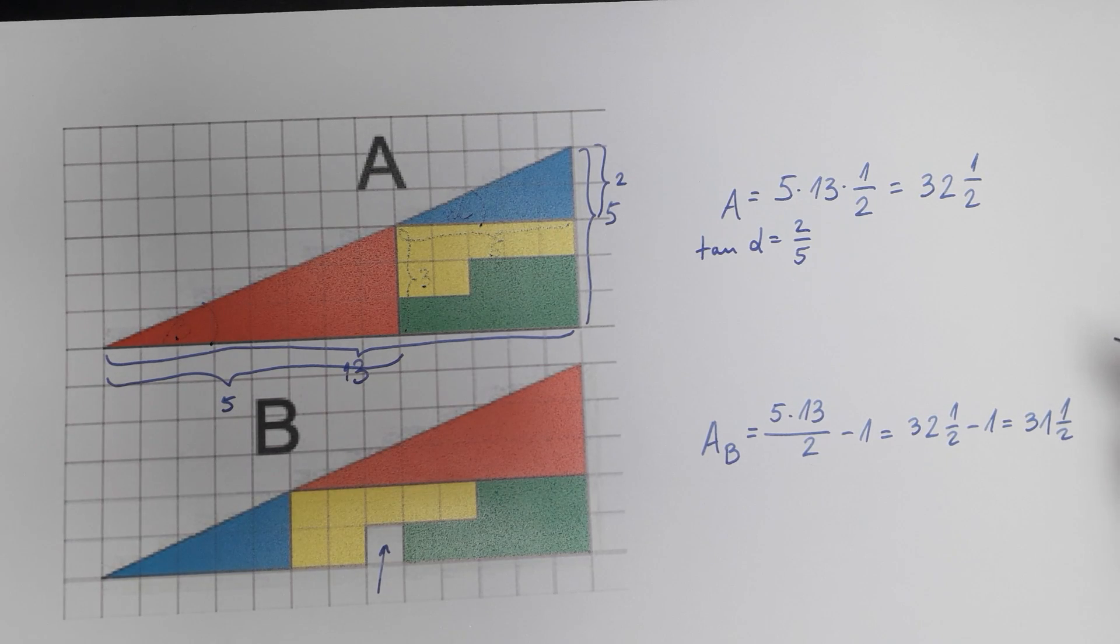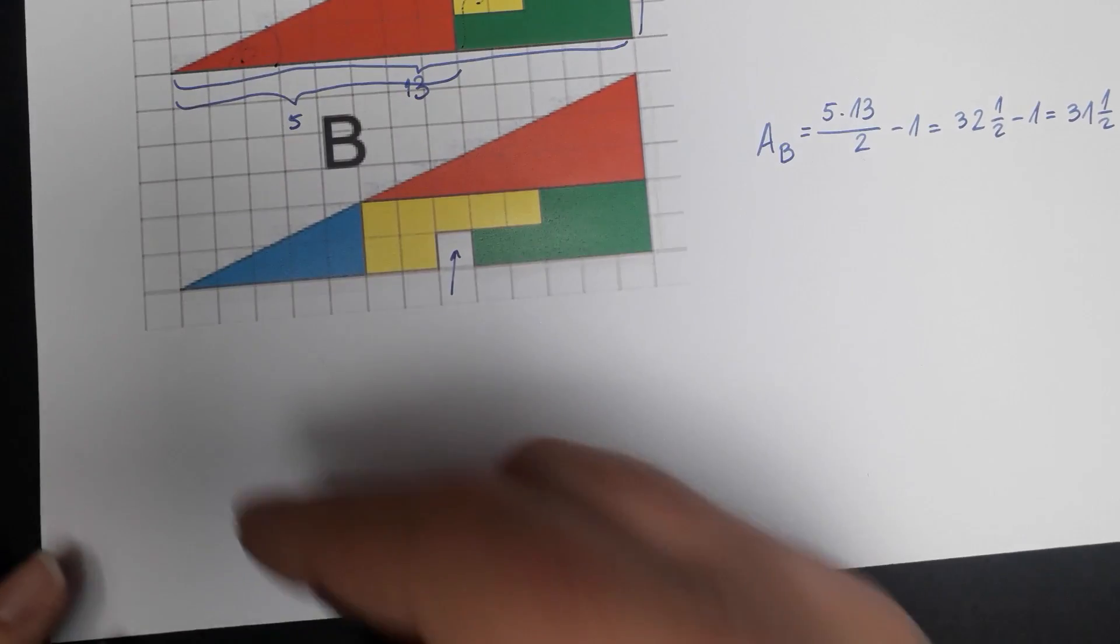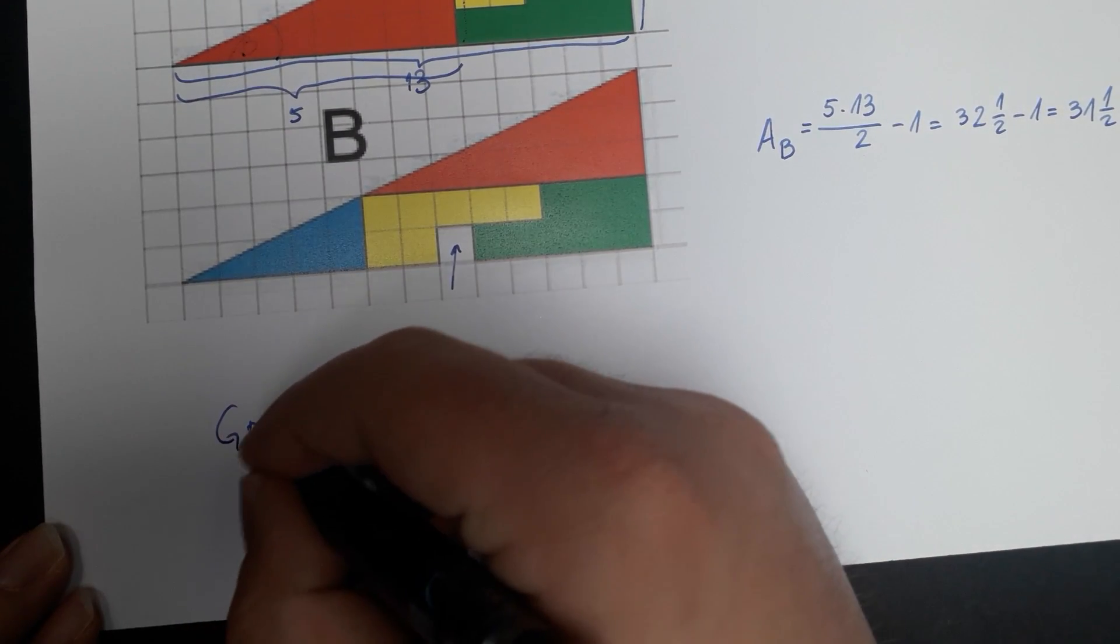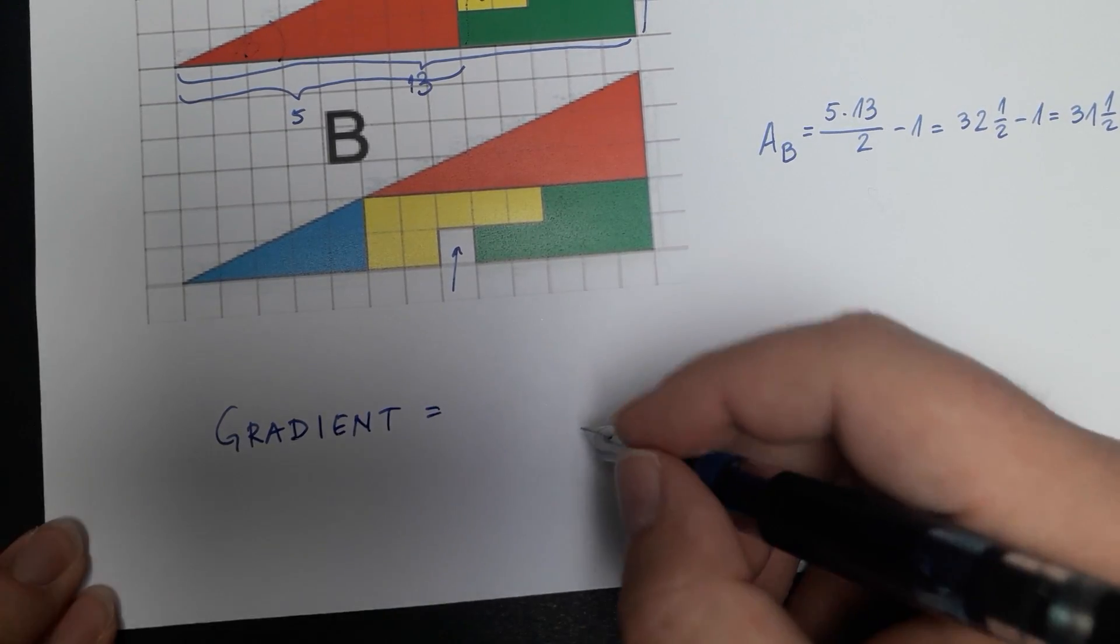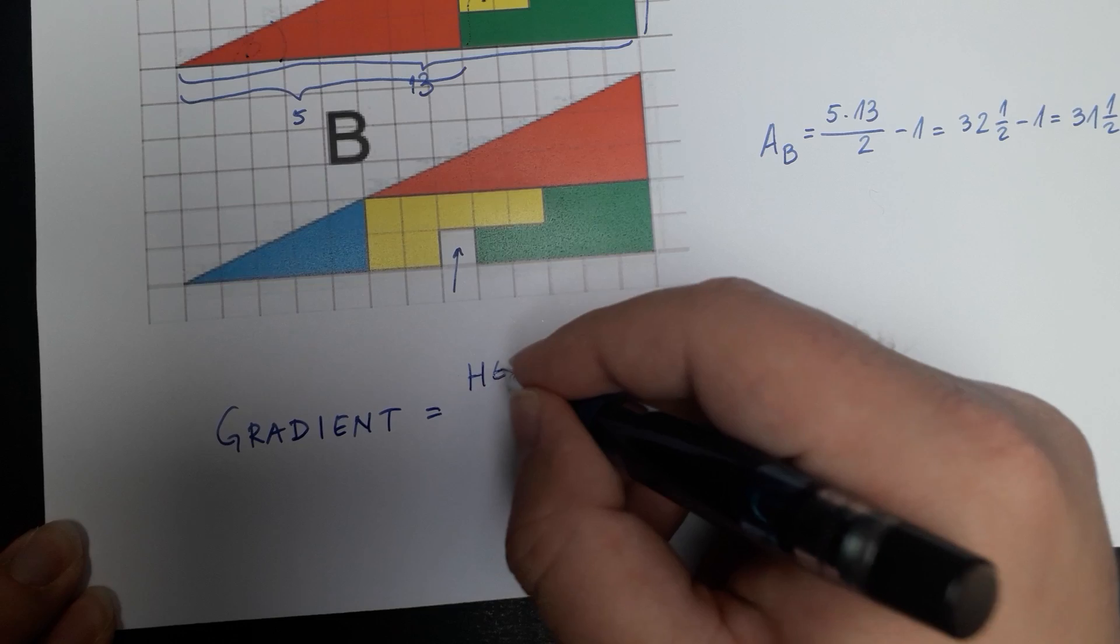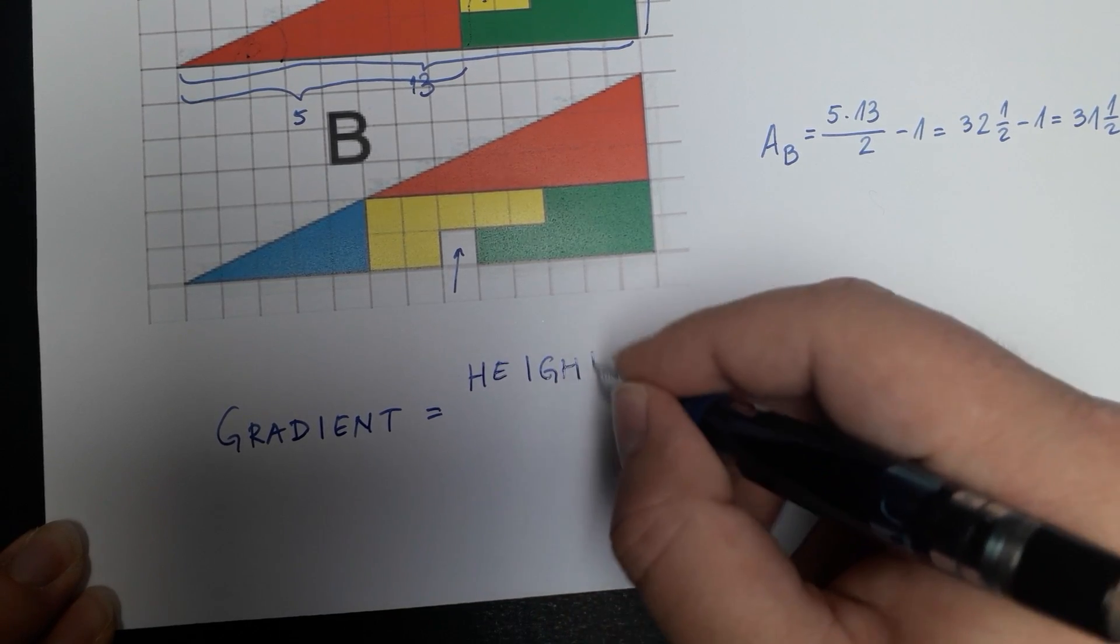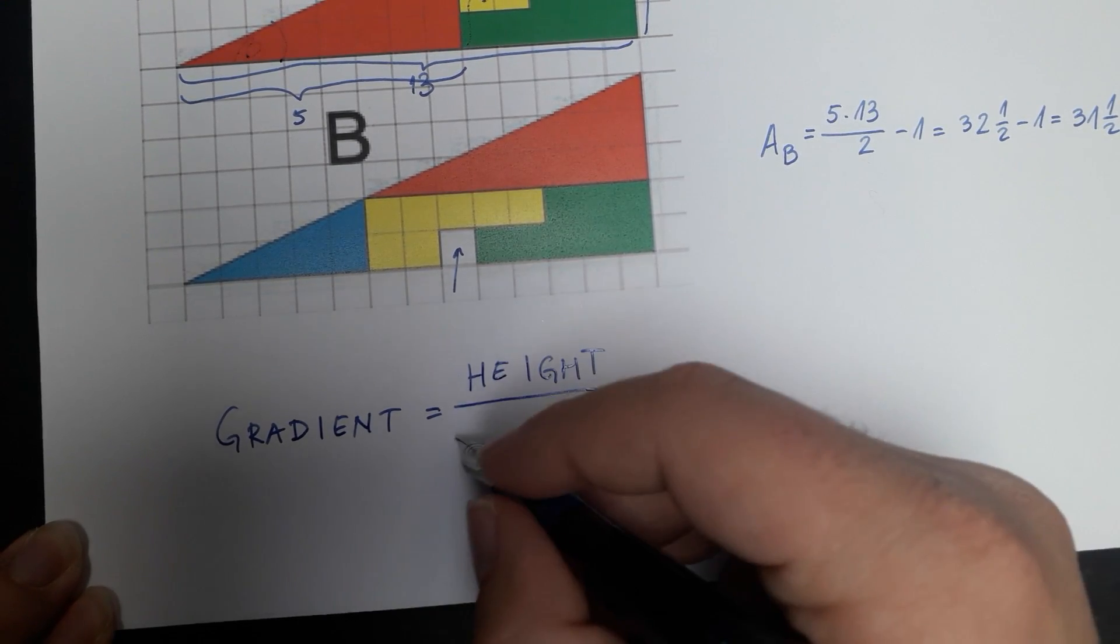Now a little bit of a reminder here. Gradient of a triangle is defined as height divided by width. Basically gradient of a triangle is defined as height of that triangle divided by its width.